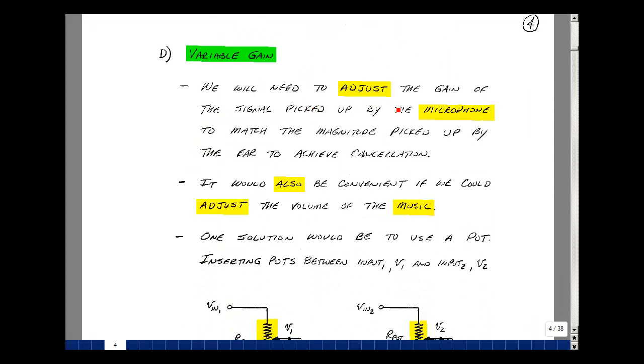We need to adjust the gain of the signal picked up by the microphone so we can match that picked up by our ear to do cancellation with a sign change. It would be nice if we could adjust the volume of the music to use as a volume control for our sound source.